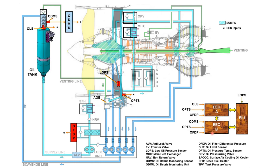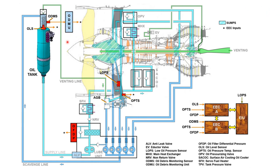Because the oil debris monitoring sensor only signals EEC B, if you access the MCDU, go to FADEC, and check EEC A under the specific functions menu, you will not see the oil debris monitoring sensor input there. Only in the EEC B channel of the FADEC system will you get the oil debris monitoring sensor signal.